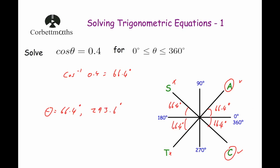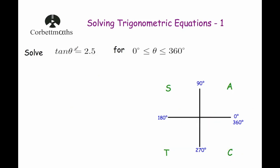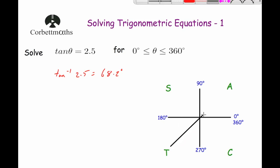Next question: solve tan θ = 2.5 for angles between 0° and 360°. We work out the inverse tan of 2.5, which gives 68.2°. That means our angle in the first quadrant is 68.2°. We mark that in all four quadrants on the CAST diagram.